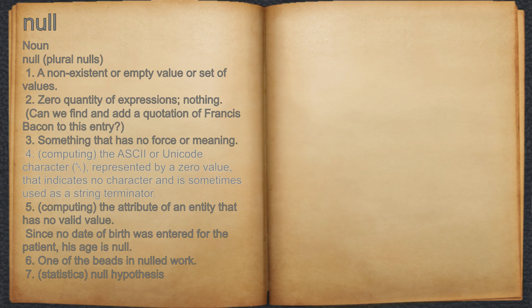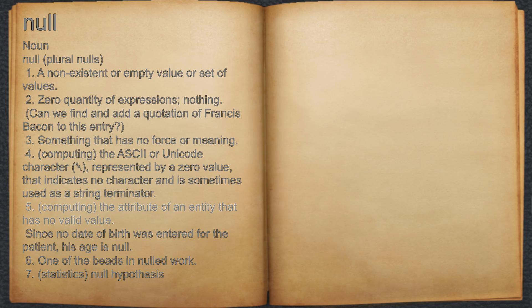4. Computing: the ASCII or Unicode character, represented by a zero value, that indicates no character and is sometimes used as a string terminator. 5. Computing: the attribute of an entity that has no valid value. For example, since no date of birth was entered for the patient, his age is null.